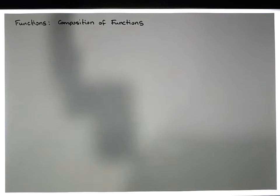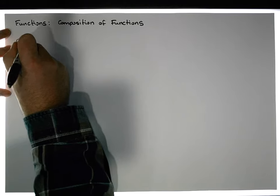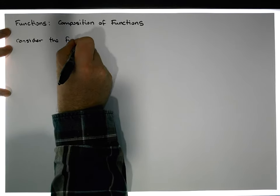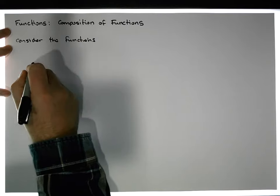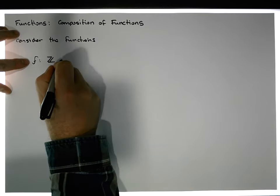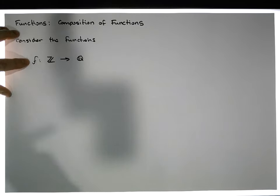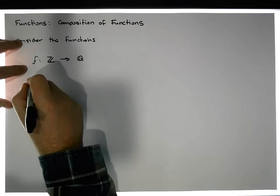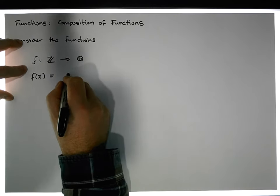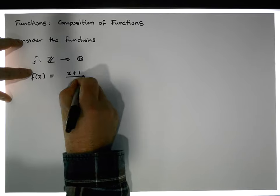Let me give you the two functions we're going to deal with for this particular example. Consider the first function f, which takes integers and maps them into the rational numbers, and it's defined by f(x) = (x + 1) / 3.